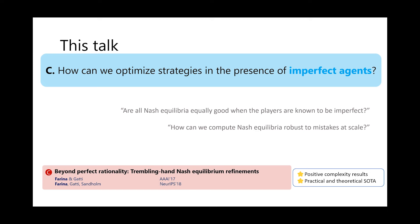I proved something and implemented an algorithm he had in mind, it worked well, we improved it together, wrote a paper, submitted it to a conference, and it got in. He suggested I go to the conference and present. There I met my advisor here at CMU, we had similar research interests, I applied to CMU and got in. Without Nicola I wouldn't have known what a PhD was, and I wouldn't have known about Pittsburgh — I would have said it was in Germany, it sounds very German.